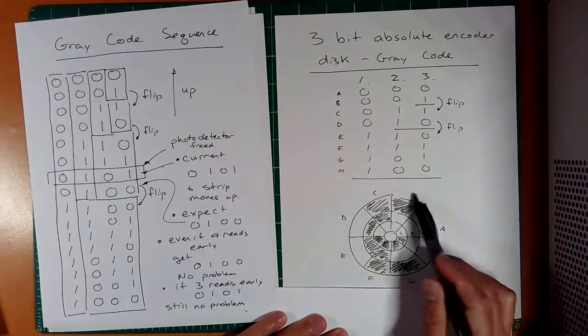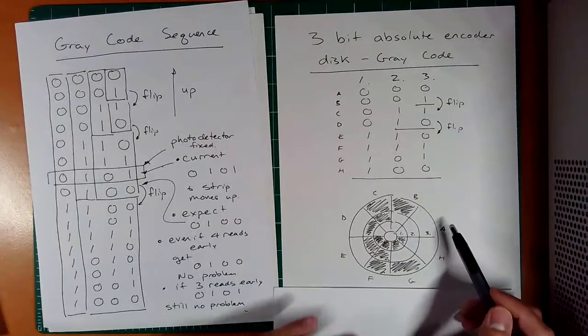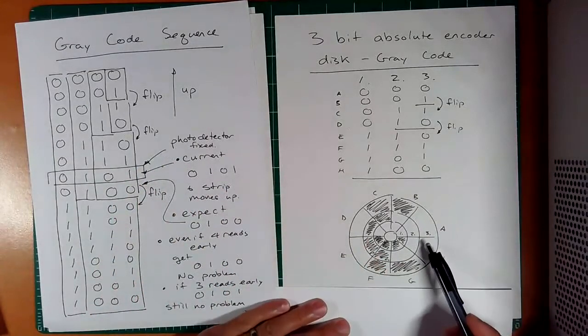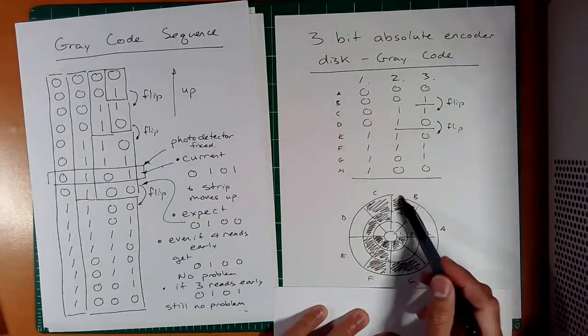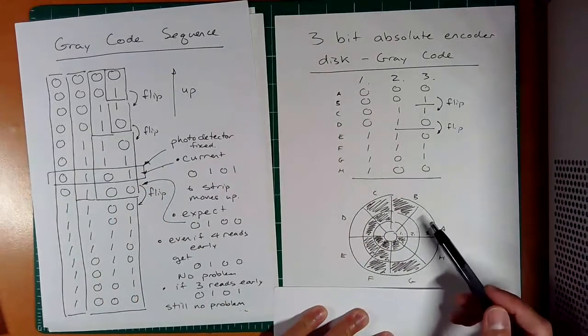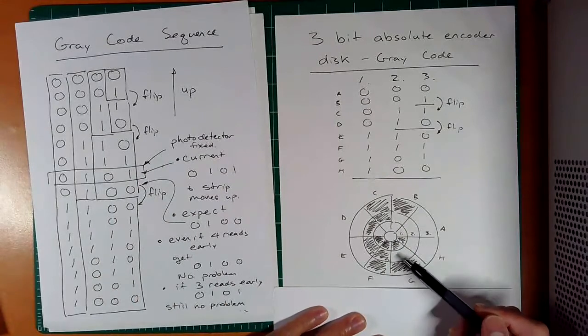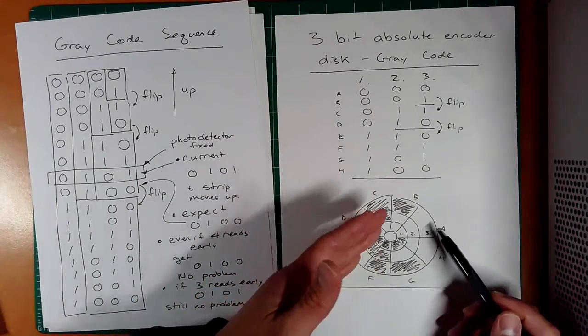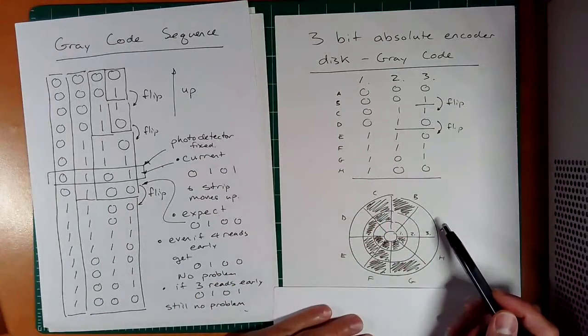Now, what's one big issue with this absolute encoder? Am I getting the same resolution as an incremental? No, because I'm here, I'm getting only eight counts per cycle, nowhere near the 2,500 that I expected before. So you're getting a lower resolution here, but you're getting an absolute reading.